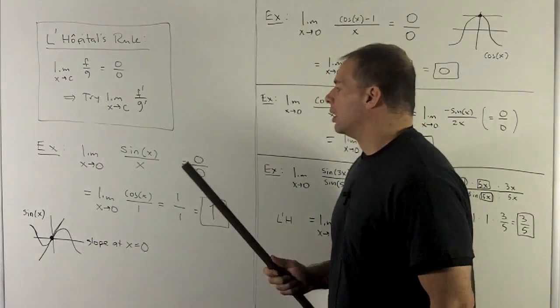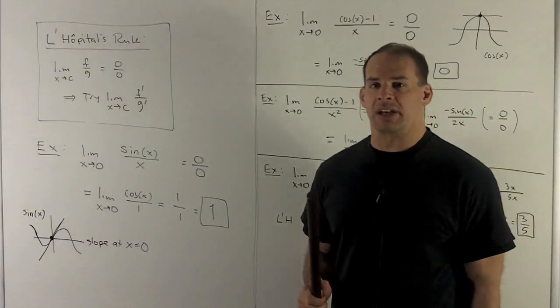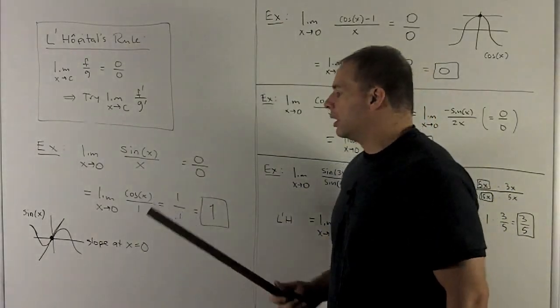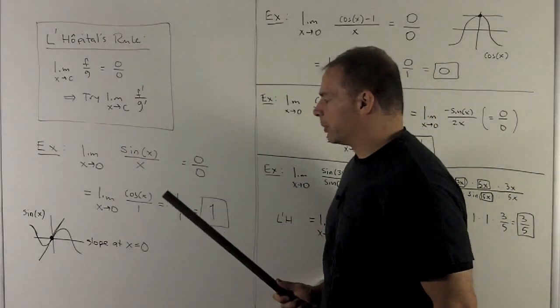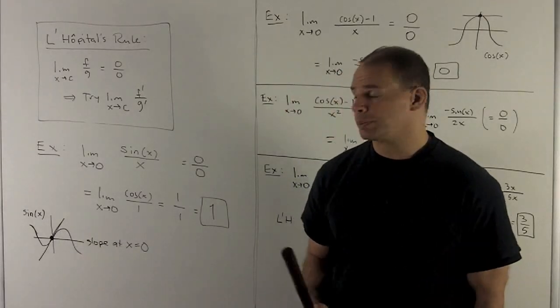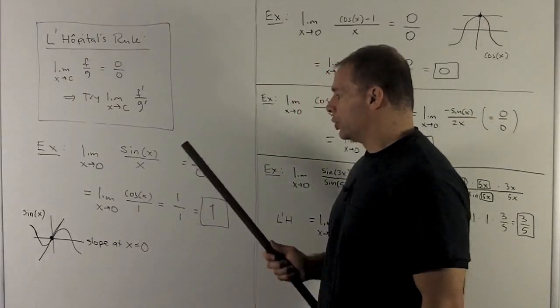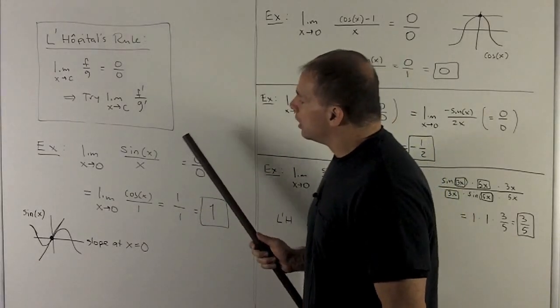So let's take a look. Let's consider first the limit as x goes to 0 of sine of x over x. Okay, we've done this computation before. This is going to give us the slope of the tangent line of sine of x at 0. And we know that that answer is going to be 1. Using L'Hopital's rule, let's take a look.